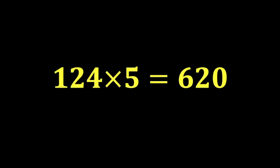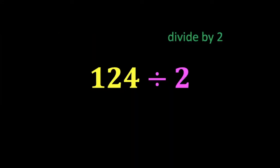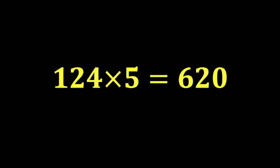Okay, what if we divided first? Let's try that out. Here we go. Let's divide by 2 first. 124 divided by 2 is 62 and then we'll multiply by 10 and get 620. The same answer.